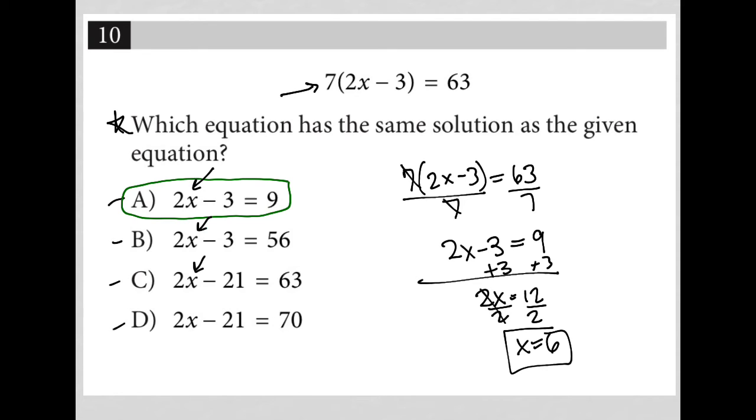You could have also distributed the 7 across the parentheses to get 14x minus 21 equals 63, then added 21 to both sides of the equation to get 14x equals 84, and divided both sides by 14.